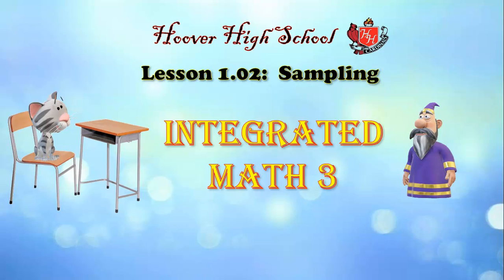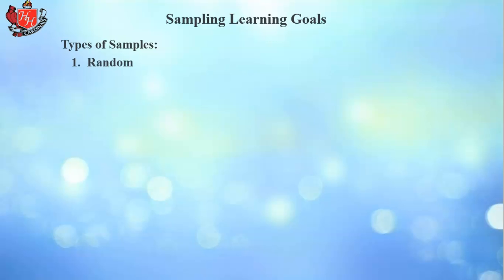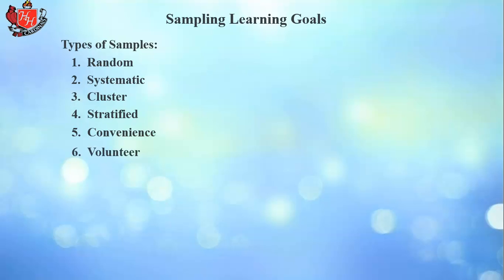This is lesson 1.2 in Integrated Math 3, and this deals with sampling and different types of sampling. Sampling is ways that you would take a survey or gather data for statistical analysis. Among the types are random sample, systematic sample, cluster sample, stratified, convenience, and volunteer. We'll look at each one of these and what they are and what their advantages and disadvantages are.